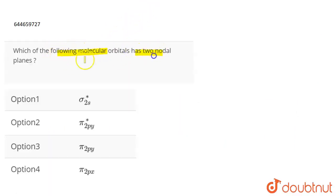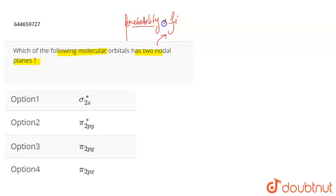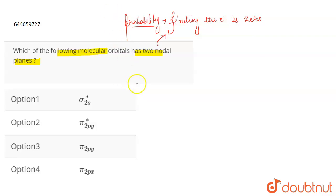My question is: which of the following molecular orbitals has two nodal planes? So basically, what do you mean by a nodal plane? A nodal plane is the plane where the probability of finding the electron is zero.